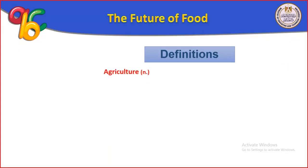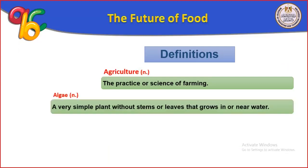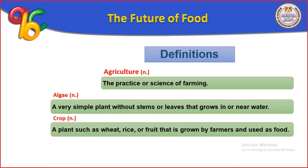What is the definition of agriculture? It is a practice or science of farming. Algae is a very simple plant without stems or leaves that grows in or near water. Crop is a plant such as wheat, rice, or fruit that is grown by farmers and used as food.